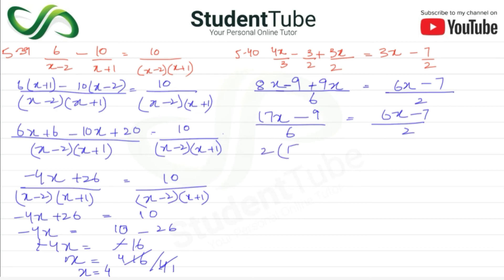Cross multiplication. So 2 multiply with 17x minus 9 is equal to 6 multiply with 6x minus 7. So 17, 2s are 34x minus 18 is equal to 6, 6s are 36x minus 6, 7s are 42.